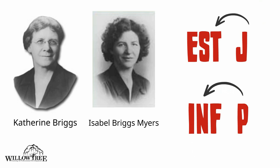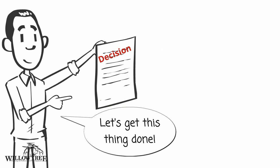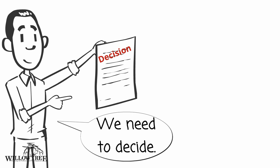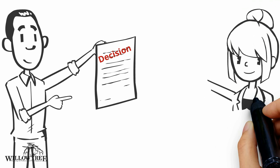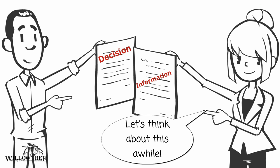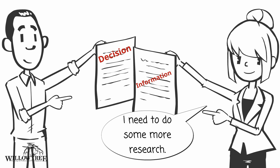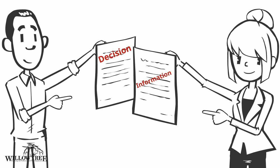Judgers show the world their decision-making function — their thinking or feeling — so they tend to be more decisive. They feel better once a decision has been made and tend to come to conclusions pretty quickly. Perceivers, on the other hand, show the world their information-gathering function — their sensing or intuition. They prefer to take in information as long as possible before making a decision.